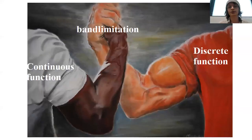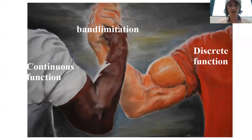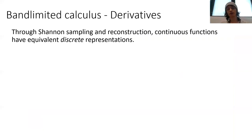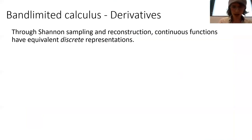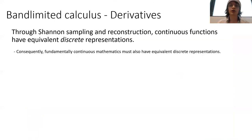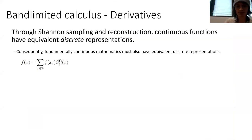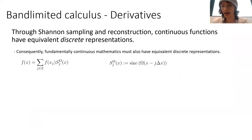With band limitation, we can take a continuous function and discrete function and make them equivalent — perfectly equivalent things. And because they're perfectly equivalent through Shannon sampling reconstruction, these continuous functions that have fundamentally continuous properties must also have equivalent discrete representations. These continuous properties include derivatives, integrals, and other things of calculus. Starting with the reconstruction formula, where I've labelled s_omega as our sinc function — omega is again the ultraviolet cutoff, delta x is the lattice spacing.